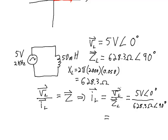So the current is VL over ZL. The voltage across the inductor is 5 volts at an angle of 0 degrees; the impedance is 628.3 ohms at an angle of 90 degrees. We divide the magnitudes and subtract the phase angles. 5 divided by 628.3 gives 7.95 milliamps peak current, with a phase angle of minus 90 degrees. So the current is lagging the voltage by 90 degrees.